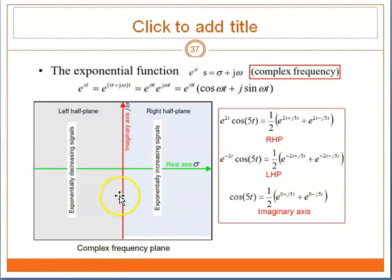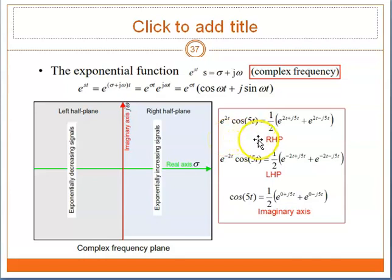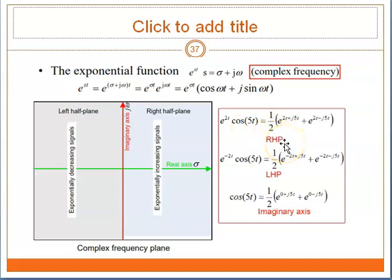On the complex frequency plane, the left half-plane contains an exponentially decreasing signal, while the right half-plane contains an exponentially increasing signal. For example, e^(2T)*cos(5T) would be on the right-hand side. On the left-hand side, you can immediately identify it when you have a negative exponent — the minus sign indicates it is on the left-hand side.